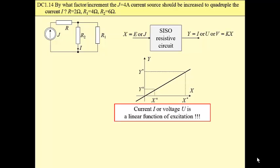A relationship is a linear function. Current or voltage is a linear function of excitation. Always, in case we have a single input, this line crosses the origin, like we have on this diagram.